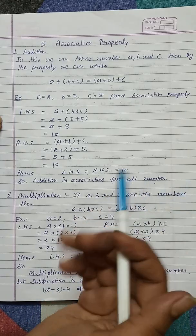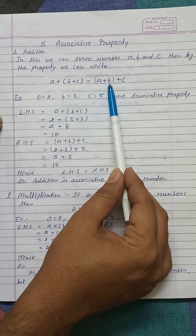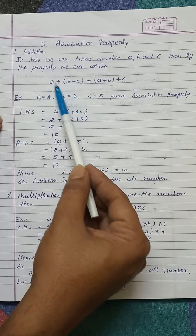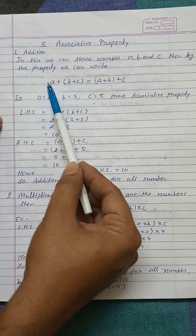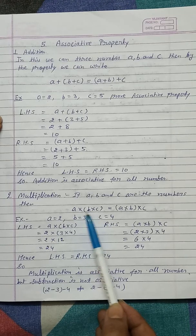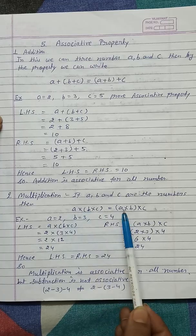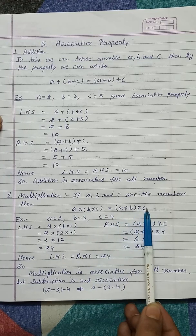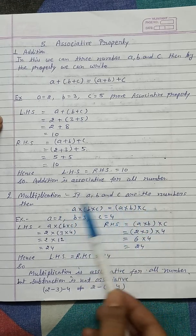If you take first two numbers, first we add these two numbers then add it to third. Or we can add last two numbers then add it to first. Similarly, first we multiply the last two numbers then multiply by the first. Or first we multiply first two numbers then multiply by the last third number. The answer remains same.